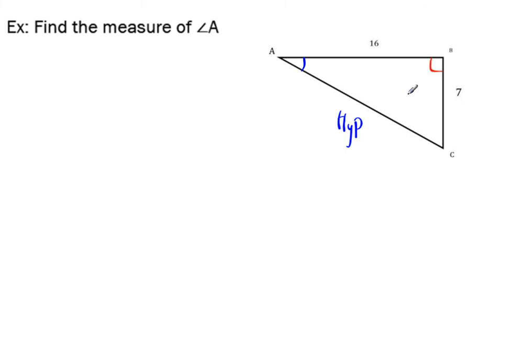So directly across from the right angle is the hypotenuse. Directly across from the angle that we're using, angle A, that's the opposite side. And then this guy over here, which is touching the angle, that's usually called the adjacent.